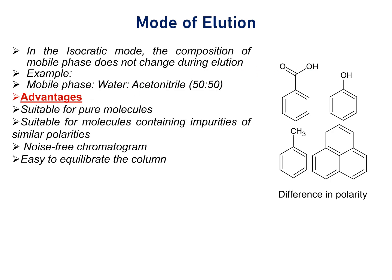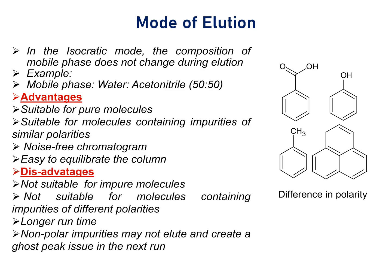Advantages of isocratic mode: suitable for pure molecules; suitable for molecules containing impurities of similar polarity; a noise-free chromatogram is obtained; easy to equilibrate the column. Disadvantages: not suitable for impure molecules; not suitable for molecules containing impurities of different polarities; longer runtime is required to elute all impurities; non-polar impurities may not elute and can create a ghost peak issue in the next run.